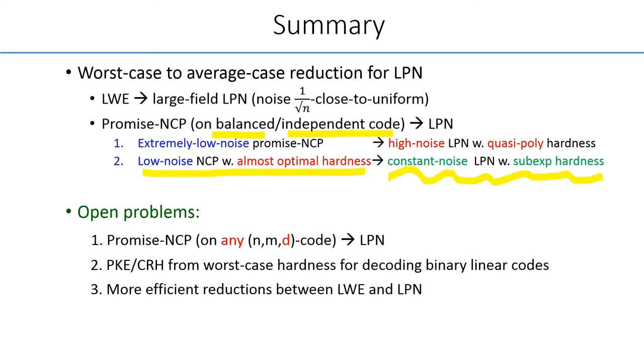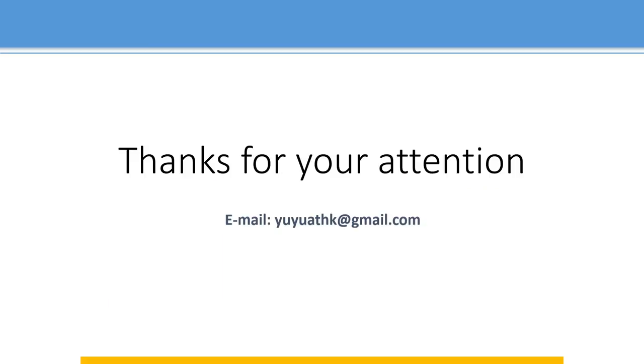There remain a few open questions such as how we can base the hardness of the LPN on promise NCP of any code with a non-trivial amount of minimum Hamming distance. How to construct public key encryption and collision-resistant hash functions from the worst-case decoding problems. And find out more efficient and useful relations between LWE and LPN. That concludes my talk. Thank you for your attention.